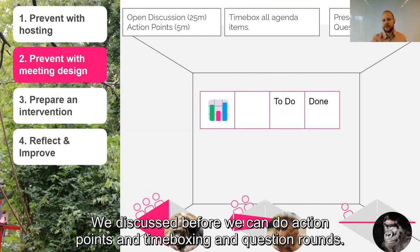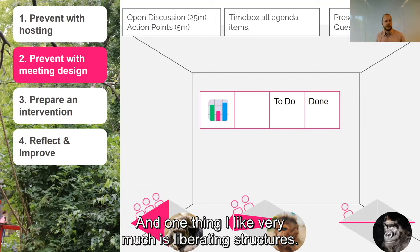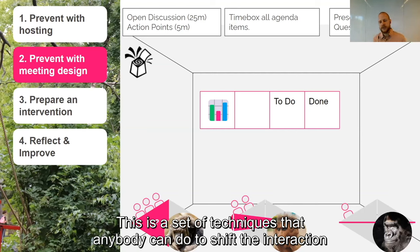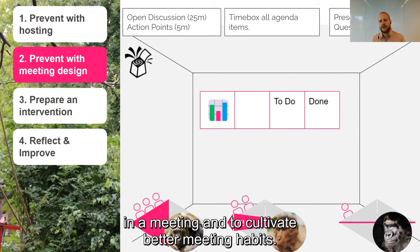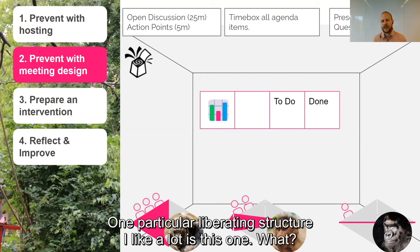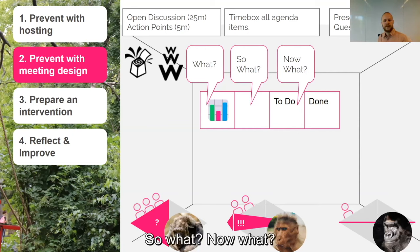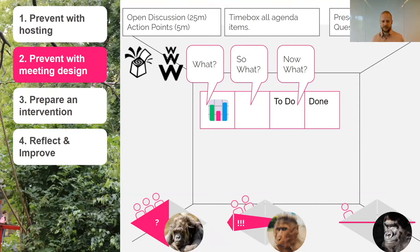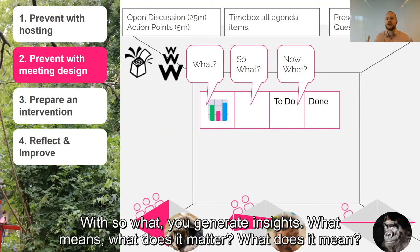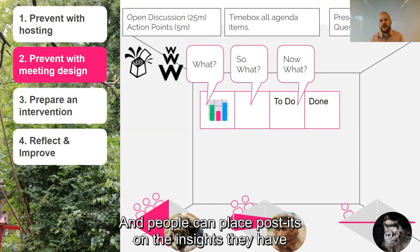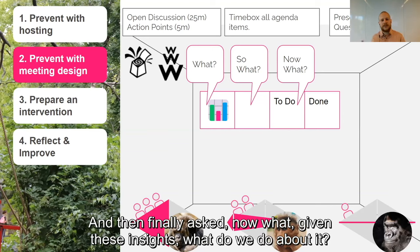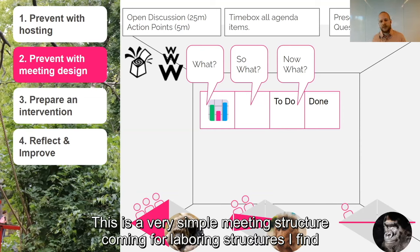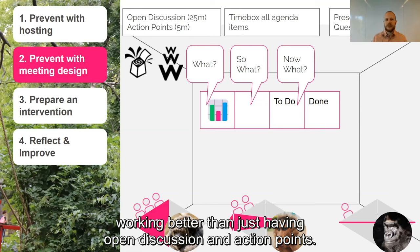If prevention doesn't work, we move on to meeting design — action points, time-boxing, question rounds. One technique I like very much is liberating structures: a set of techniques that anybody can use to shift the interaction in a meeting and cultivate better habits. One particular liberating structure I like is 'What, So What, Now What.' With 'What,' you look at the Obeya and get a shared understanding of the facts. With 'So What,' you generate insights — what does it matter, what does it mean? People can place post-its on the insights they find important. And then 'Now What' — given these insights, what do we do about it? This simple meeting structure works better than just open discussion and action points, and it solves both having insight with no action as well as rushed decisions.